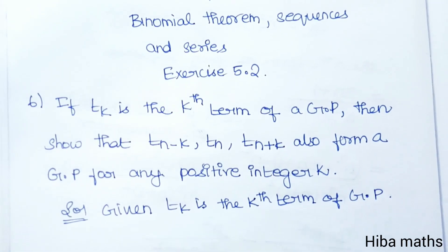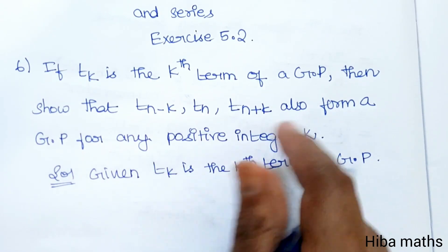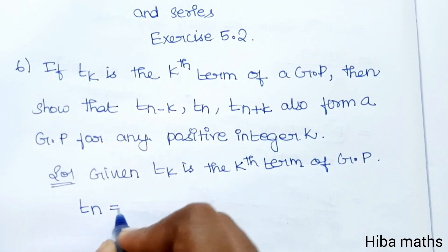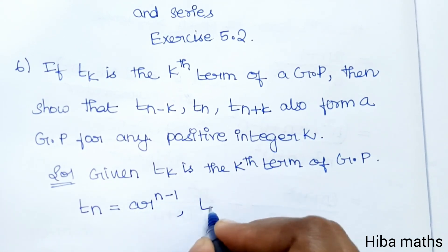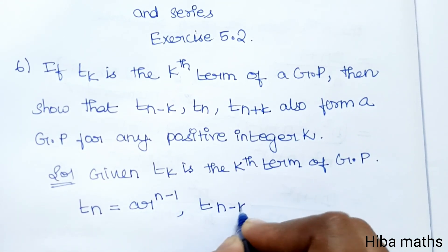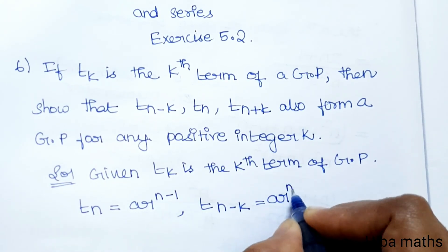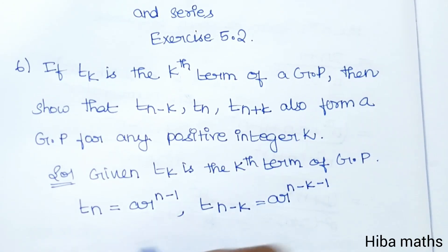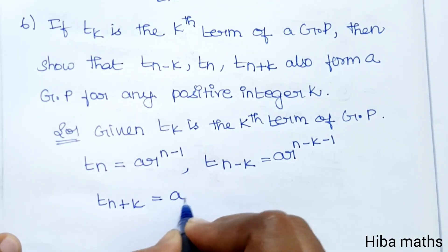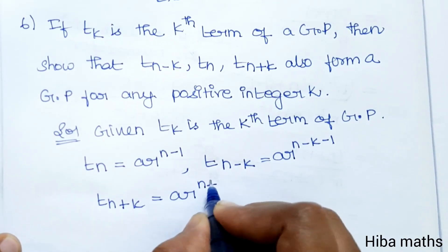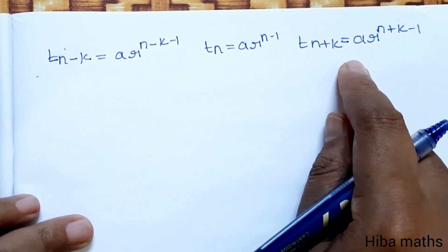The terms we need to consider: t_n in terms of GP is a·r^{n-1}. Then t_{n-k} is a·r^{n-k-1}. And t_{n+k} is a·r^{n+k-1}.